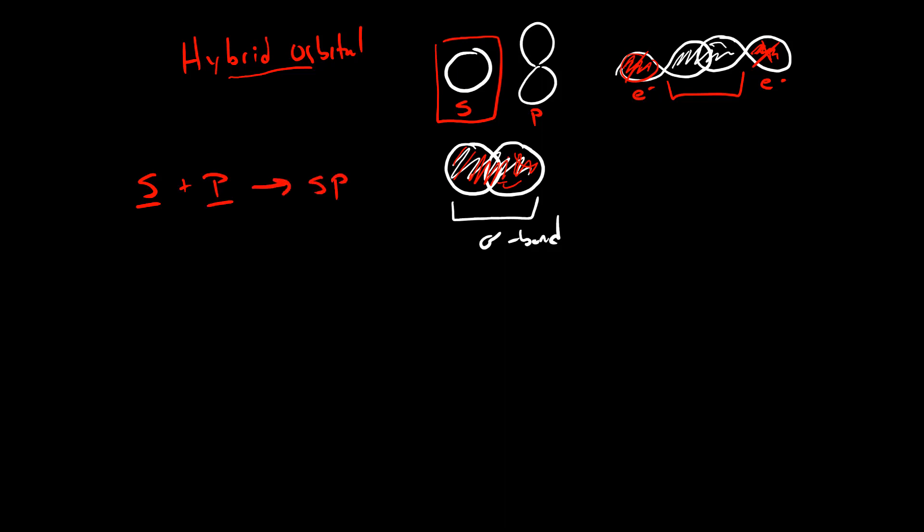So if we take an s orbital and a p orbital and smash them together, we come up with what's known as an sp orbital. We took one s and one p, we made an sp.